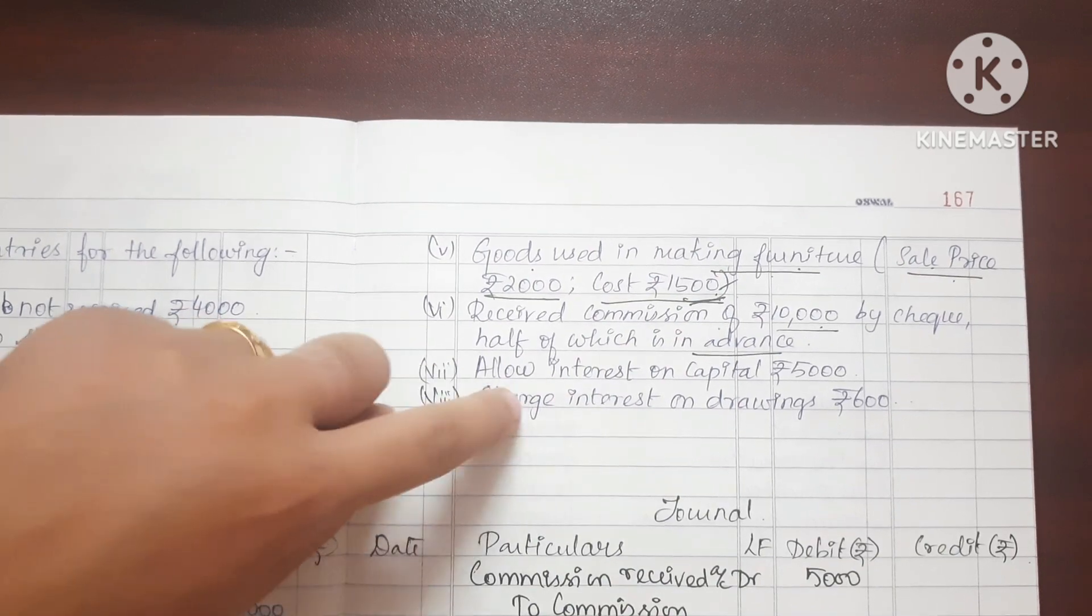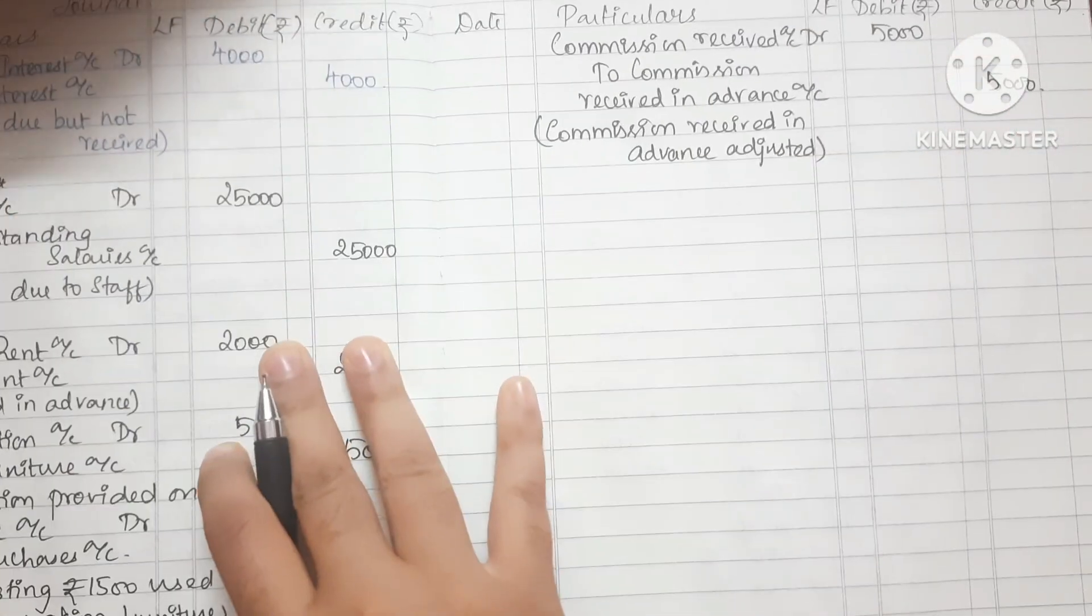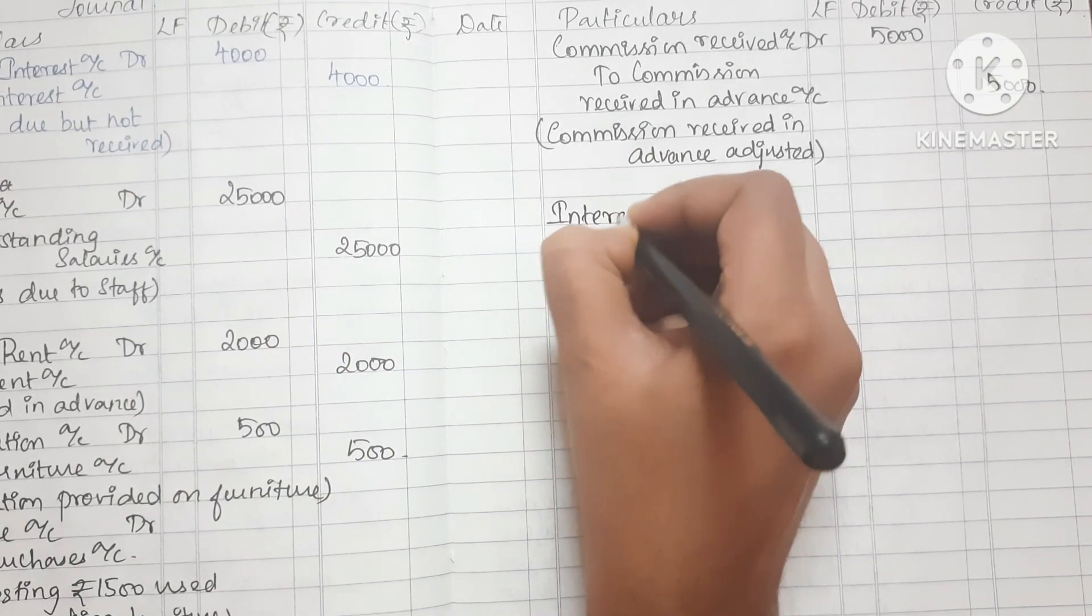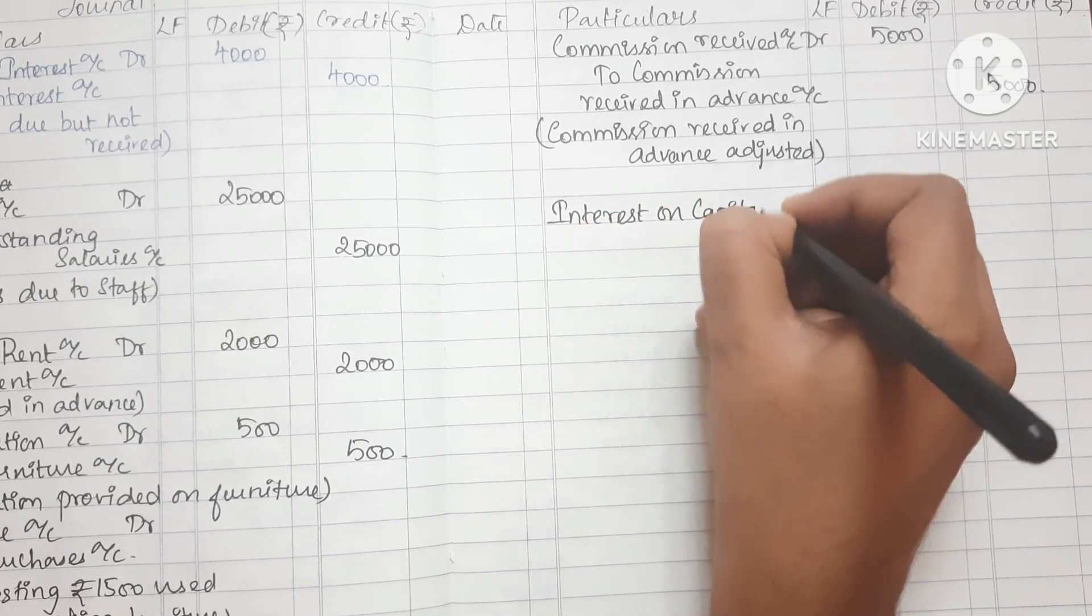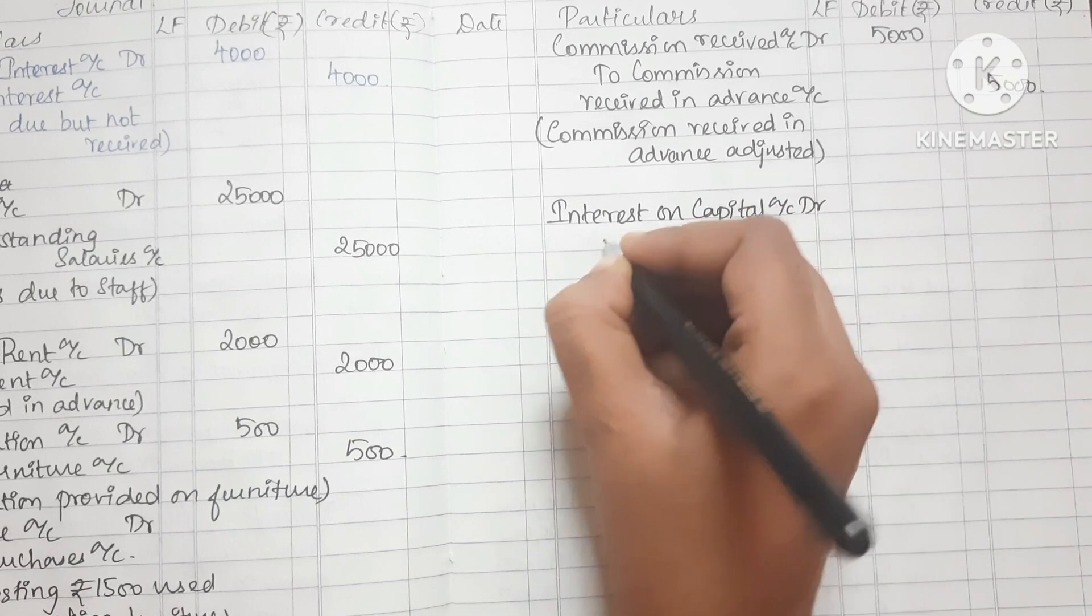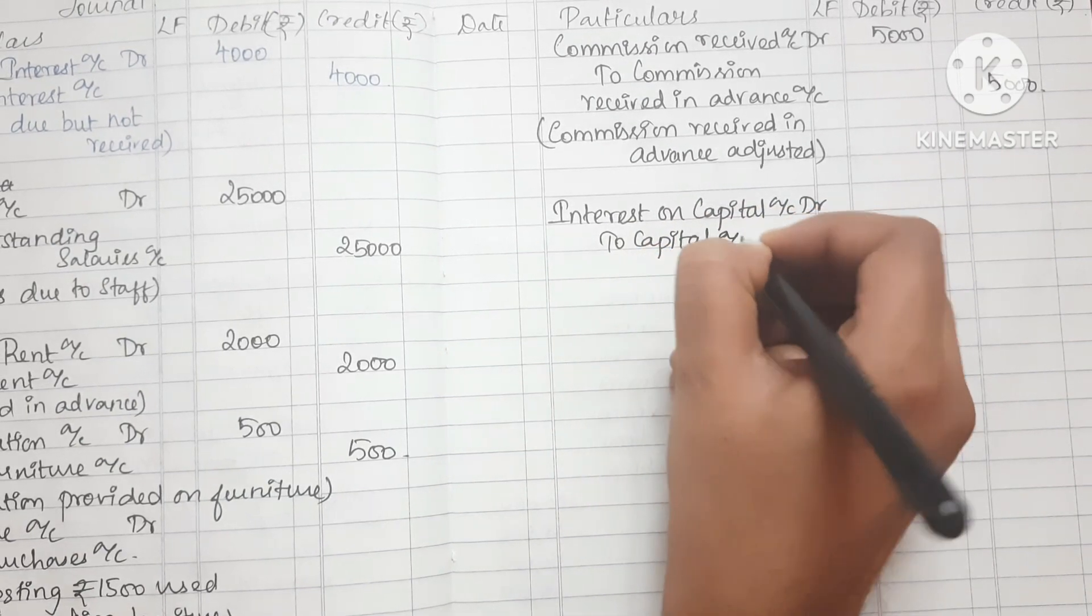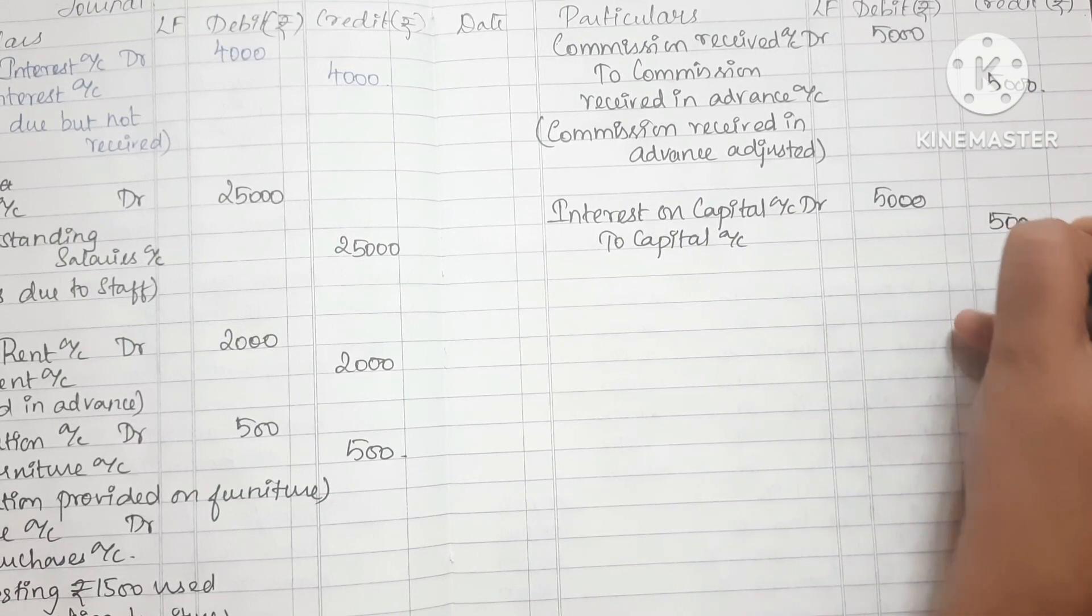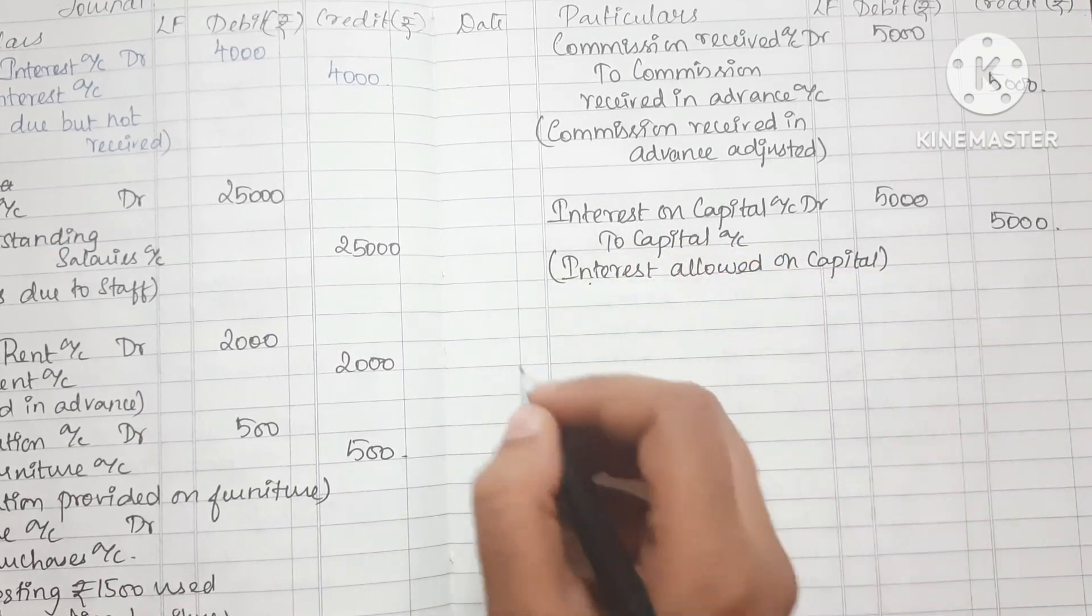Allow interest on capital Rs.5000. How do we enter? Interest on capital account debit to Capital account. Amount is 5000. This is the narration.